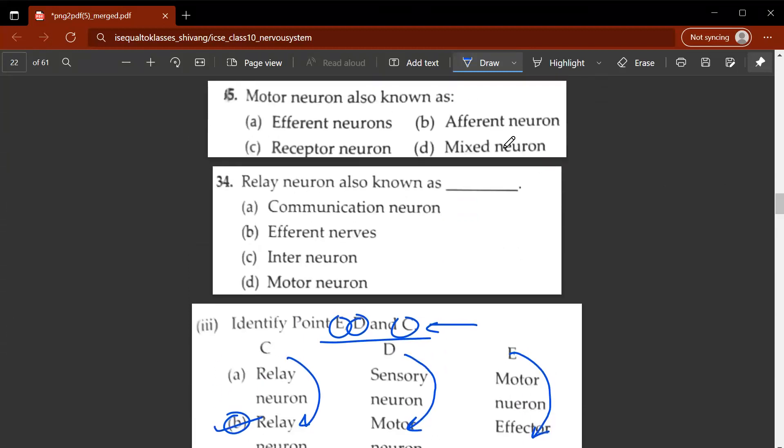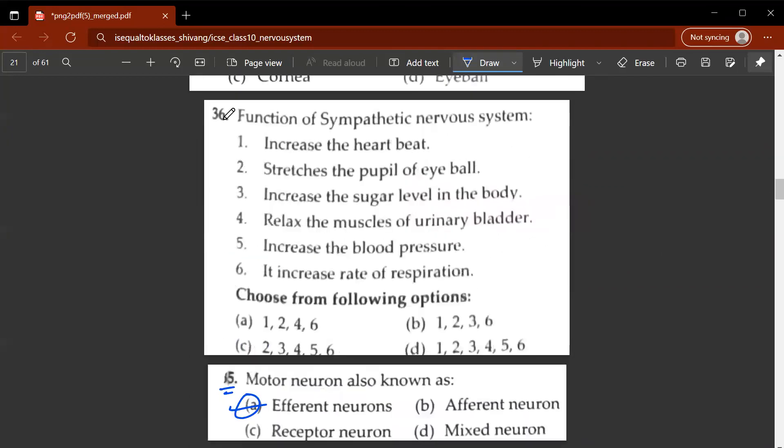34th question. Relay neuron is also known as what? It is known as interneuron. 35th question. Motor neuron is also known as efferent neuron. So A will be the correct option. 36th question. Function of sympathetic nervous system. So let's look at the following options. Increase the heartbeat, stretches the pupil of eyeball, increases the sugar level in the body, relax the muscles of urinary bladder, increases the blood pressure, and increases rate of respiration. So the correct option would be D. So it would be all of the above. These are the functions of the sympathetic nervous system.